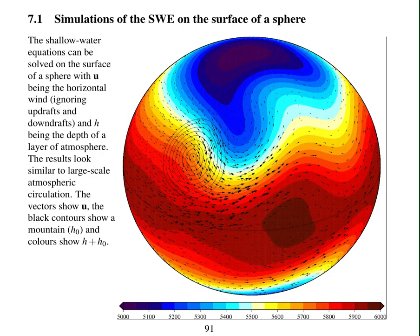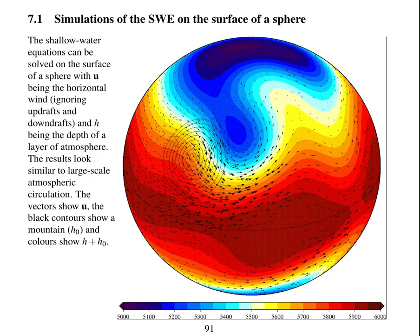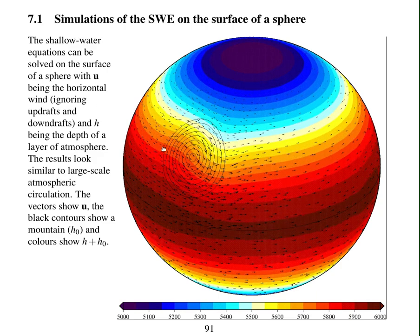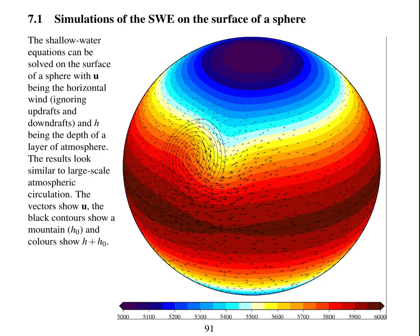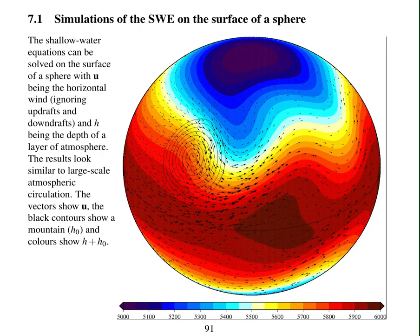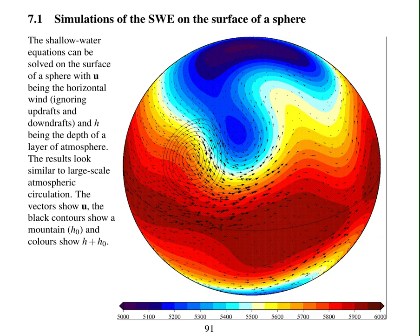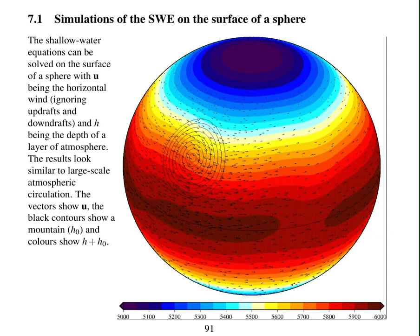This is a simulation of, so the colours are the height h. These contours here are a mountain. And you can see vectors representing the wind. This is a famous test case from Williamson et al. 1992, test case 5, flow over a mountain.